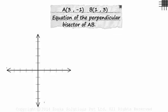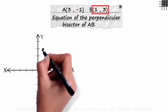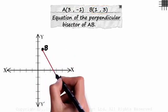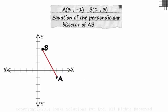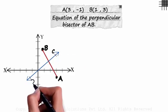First, let's plot the two points on the coordinate plane. 3 comma minus 1 will be here. And 1 comma 3 will be this point. Let's join points A and B. Its perpendicular bisector will look a bit like this. Let's call it CD.